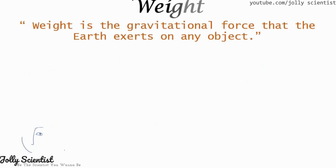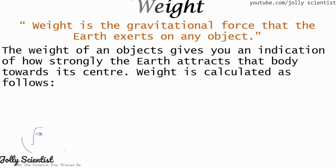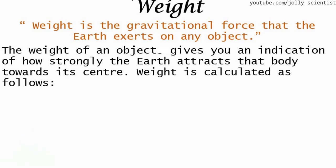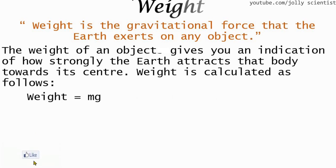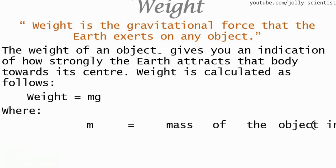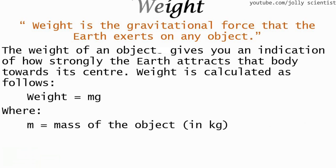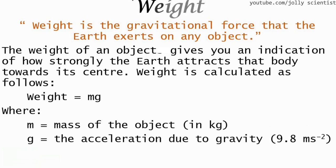Weight is the gravitational force that the Earth or any other astronomical body exerts on an object. The weight of an object gives an exact indication of how strongly the Earth or any other planet attracts that body towards its center. It is calculated as weight equals mass times g, where M is the mass and g is the acceleration due to gravity.